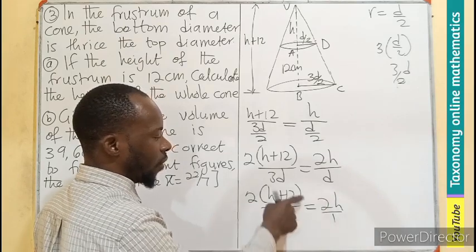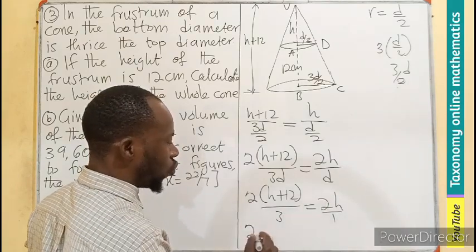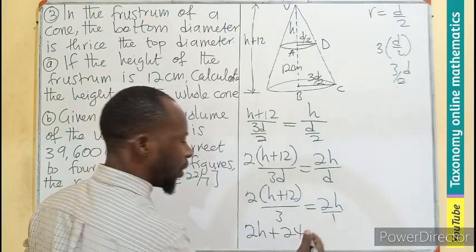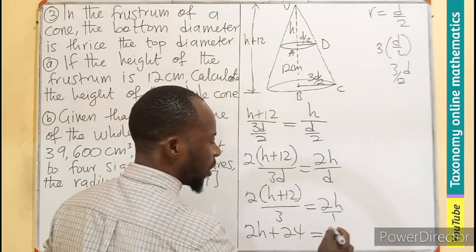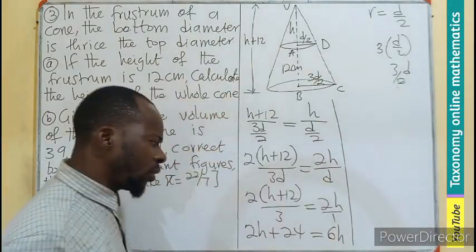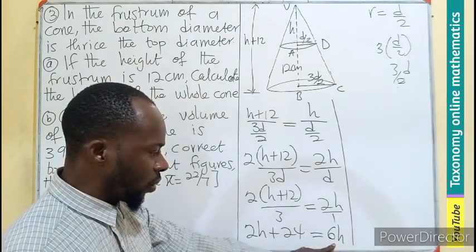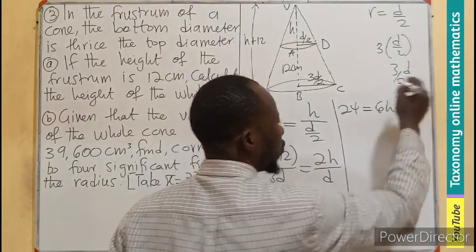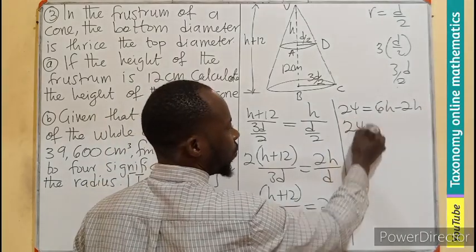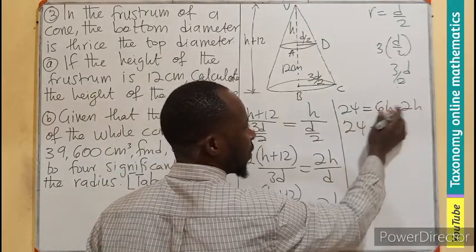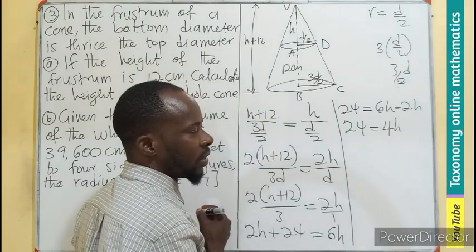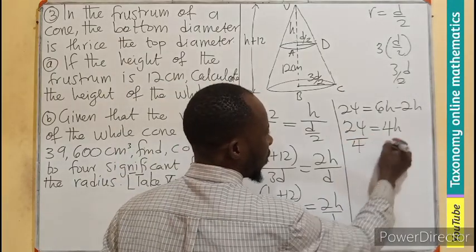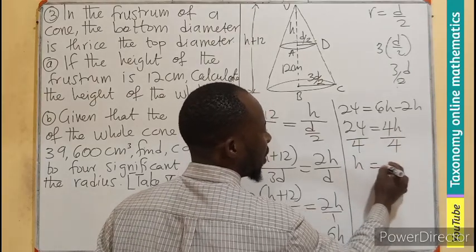I do cross multiplication. Multiply by 3, multiply this by 1. So I will have 2H plus 24 equals 3 times 2H, that gives us 6H. I can group the like terms to have 24 equals 6H minus 2H. So 24 equals 4H. We divide both sides by the coefficient, so this over 4, this divided by 4. H is going to be 6.